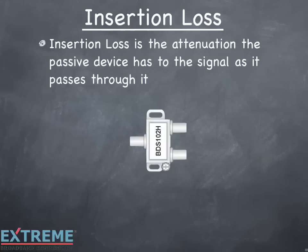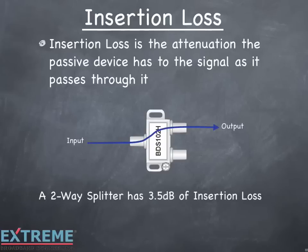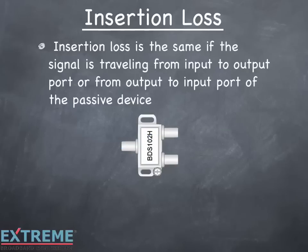Insertion loss is the attenuation the passive device has to the signal as it passes through it. Here we're showing a signal flowing from the input to the output of a two-way splitter. A two-way splitter has 3.5 dB of insertion loss. Insertion loss is the same if the signal is traveling from the input to the output ports, or from the output ports to the input port of the passive device.